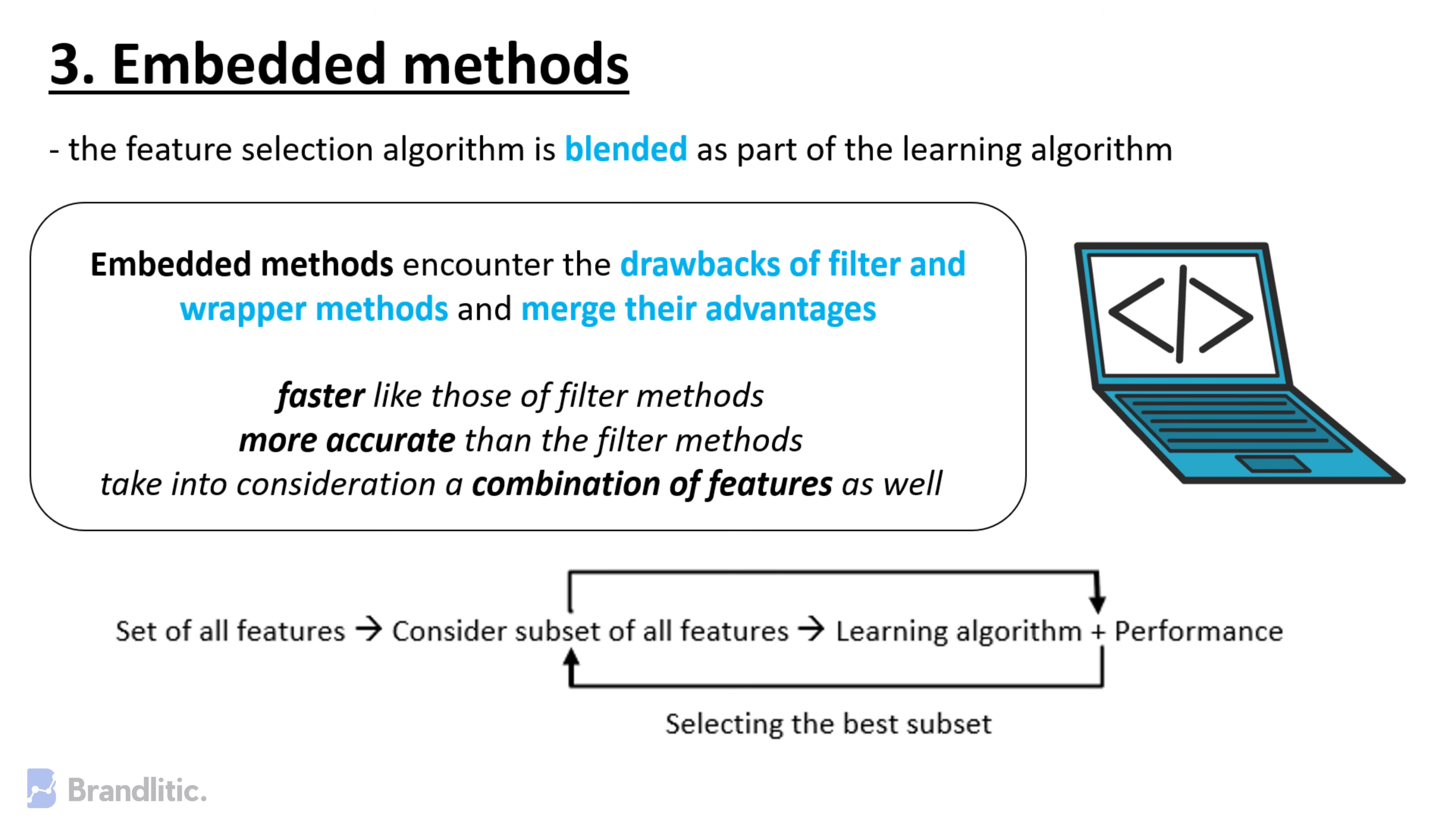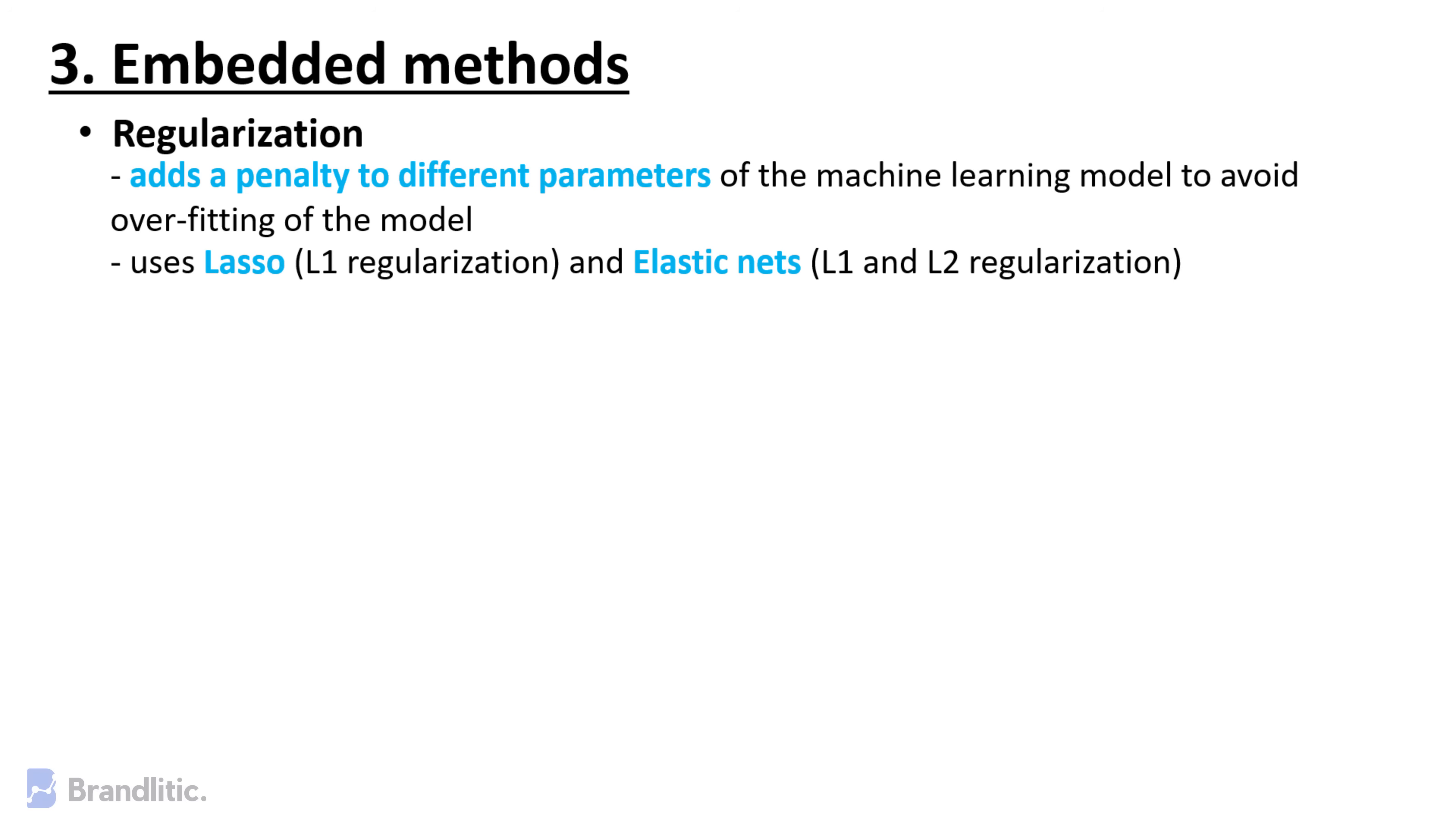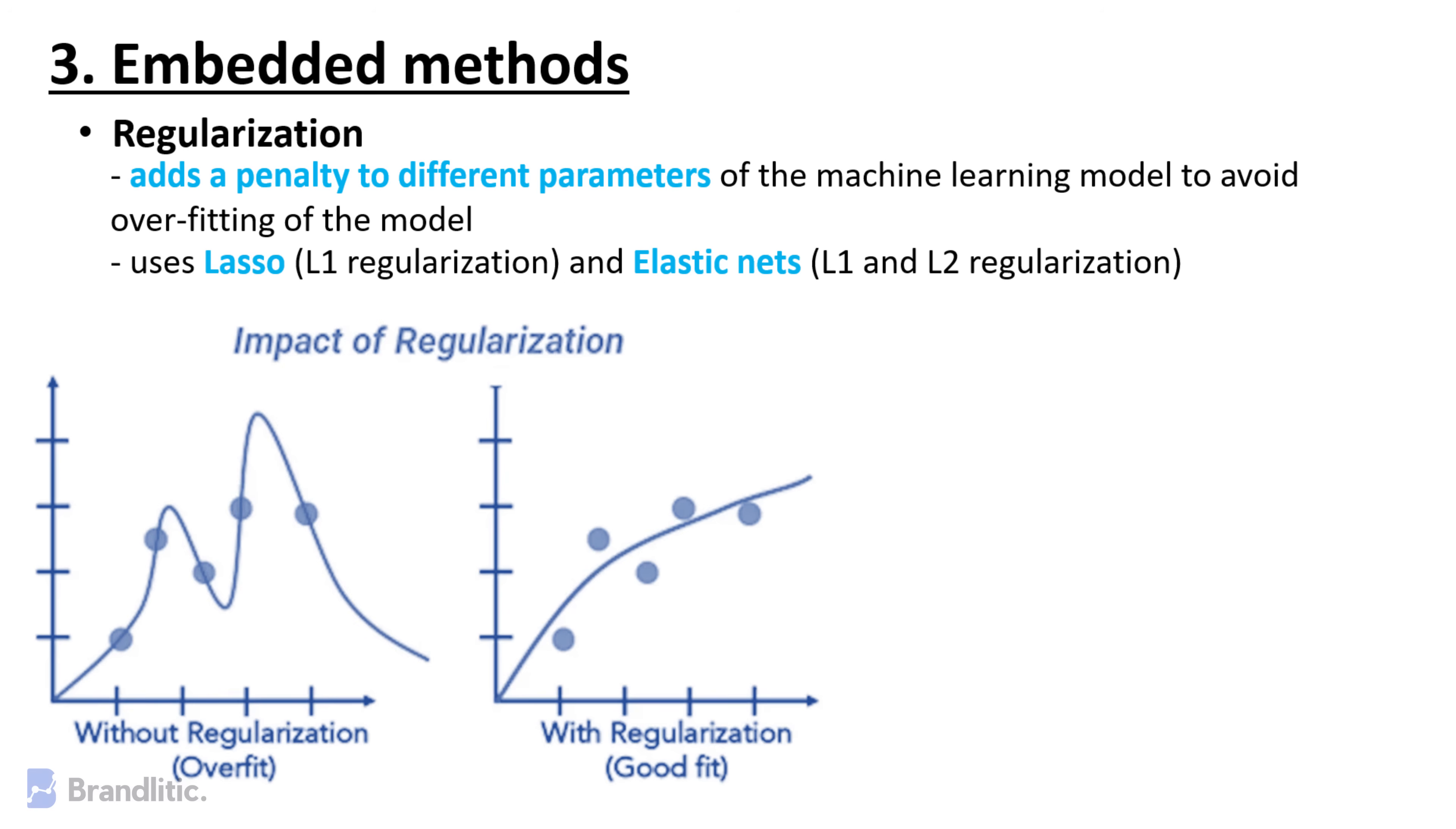Regularization. This method adds a penalty to different parameters of the machine learning model to avoid overfitting of the model. This approach of feature selection uses LASSO, which is L1 regularization, and elastic nets, which is L1 and L2 regularization. Accordingly, the penalty is applied over the coefficients, thus bringing down some coefficients to zero, and thereby, the features having zero coefficients can be removed from the dataset.